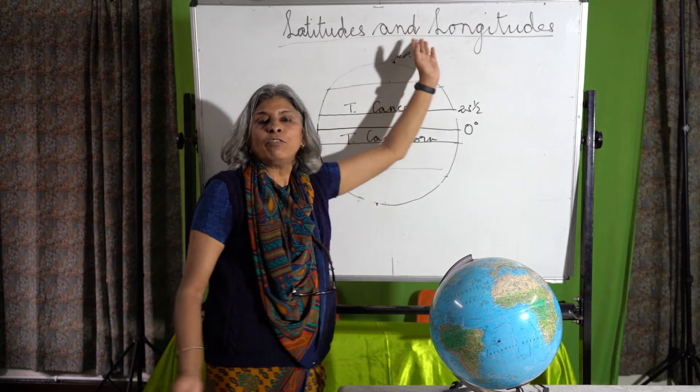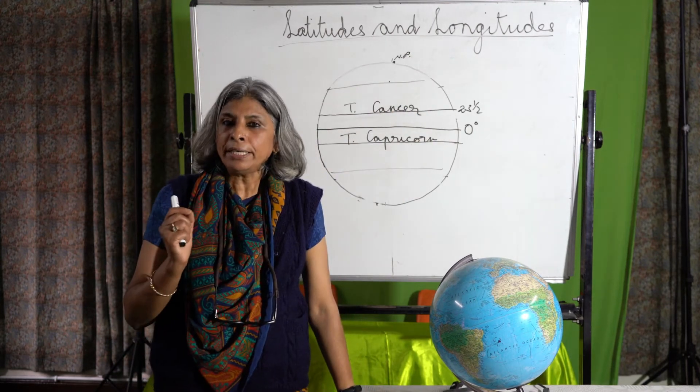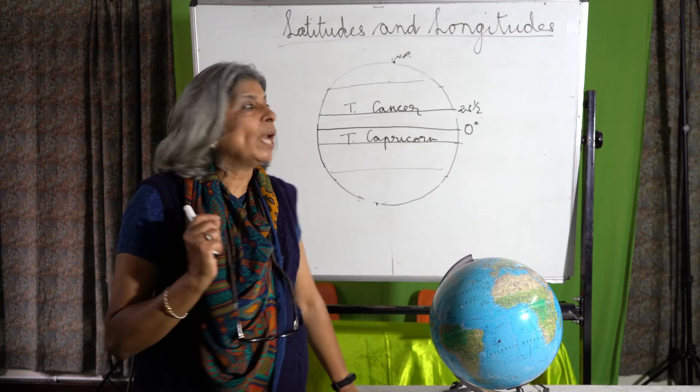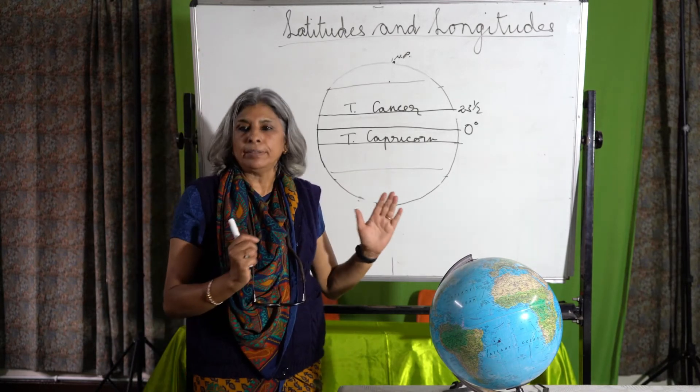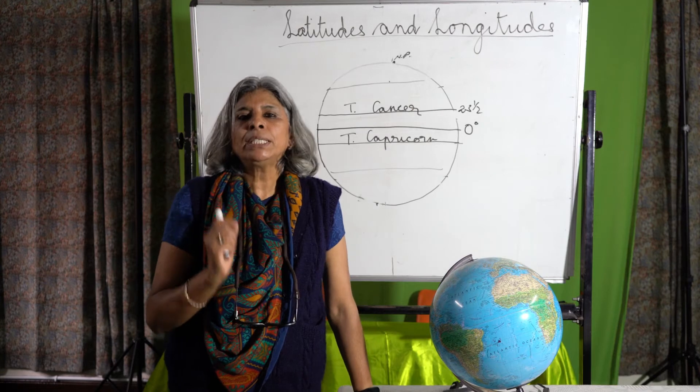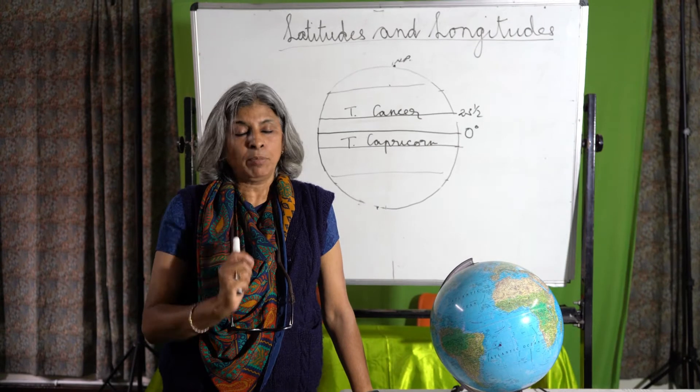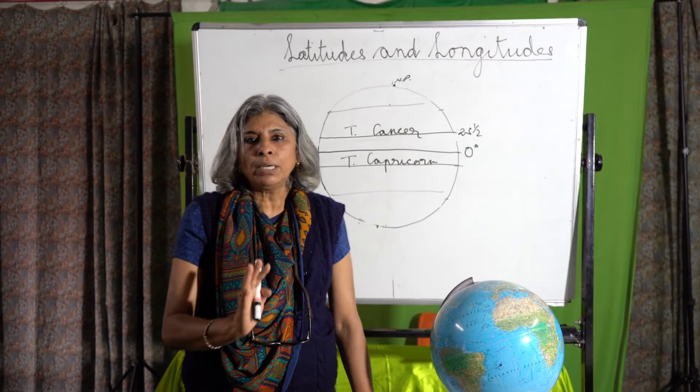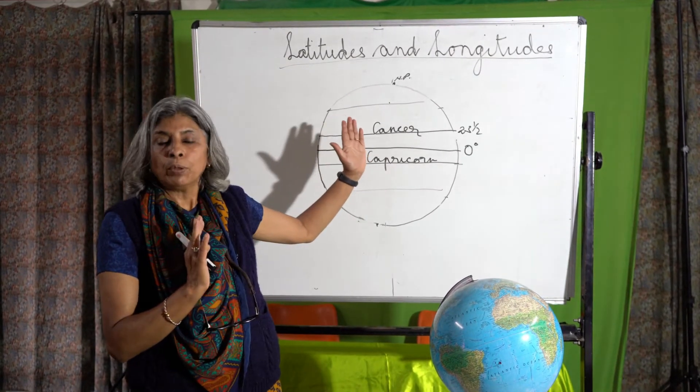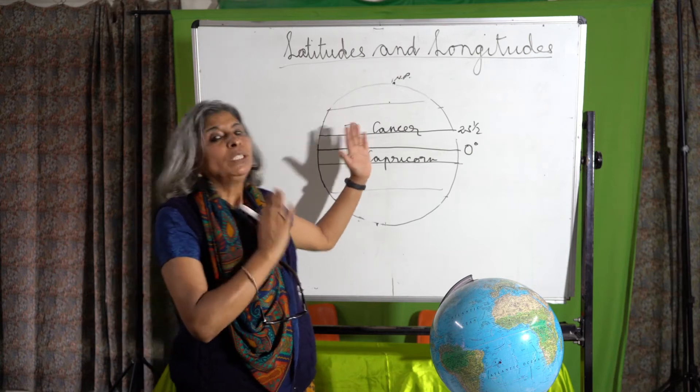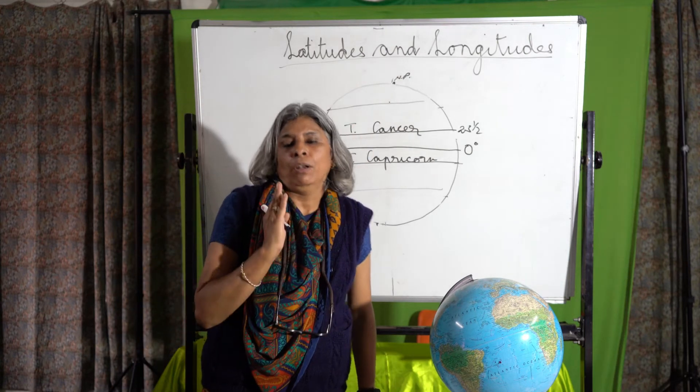The most important line of longitude is the zero degree line of longitude which is also known as the prime meridian. Now, it passes through Greenwich so it is also known as the GMT or the Greenwich Mean Time. All the times throughout the world, we calculate them according to this line of longitude.